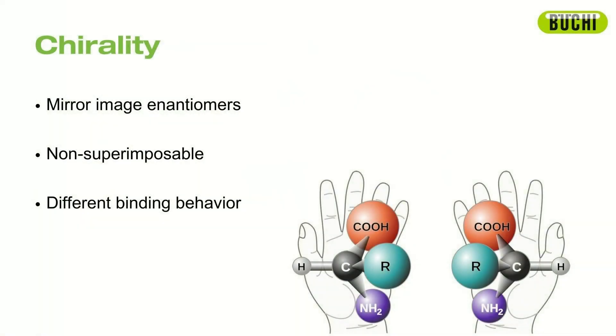So let's transition to chiral separations. Chiral molecules are really interesting because two molecules can actually have the same chemical formula, but based on how the atoms are oriented in the structure, they have different properties and actually act differently. Think of your hands — each hand has five fingers, and if you put your hands together they are mirror images, but you cannot superimpose your hands on top of each other. Your left hand is innately different than your right hand, and this is the same idea as the difference between different chiral molecules.